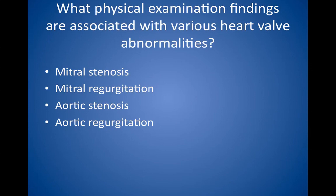In terms of the history, aortic regurgitation can present acutely with severe dyspnea, acute pulmonary congestion, and cardiogenic shock. It can also present chronically with dyspnea on exertion, orthopnea, and paroxysmal nocturnal dyspnea.